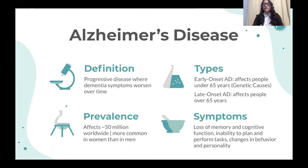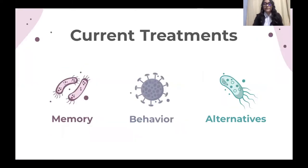Major symptoms are a loss of memory and cognitive function, an inability to plan and perform tasks, and changes in behavior and personality. Current treatments include cholinesterase inhibitors to improve memory, antipsychotics and therapy to stabilize behavior, and alternatives such as home remedies and vitamins which are easier to access but less regulated by the FDA.